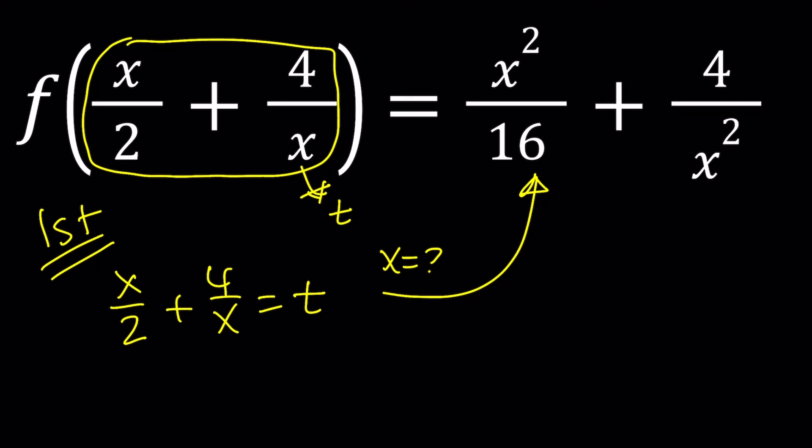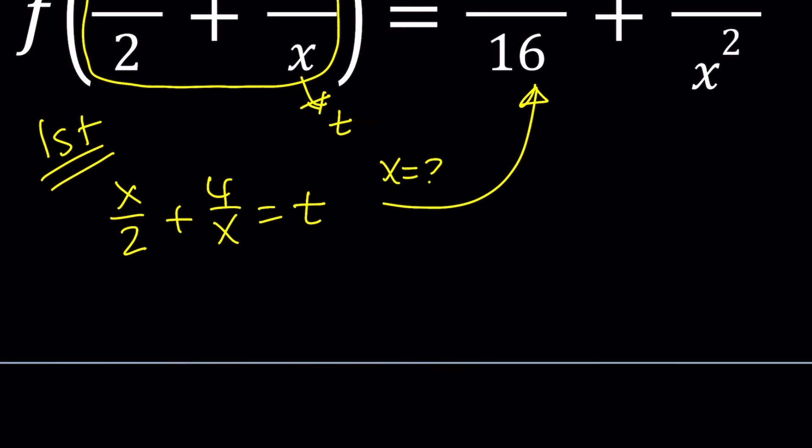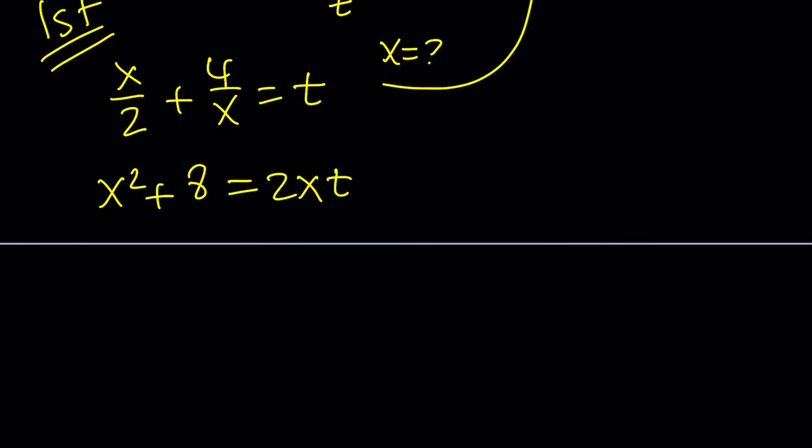Make sense? Because, obviously, whatever we find for x should give us t on the left-hand side. And we can check that, too. So, let's go ahead and cross-multiply, multiply everything by 2x. This is going to be x squared. When you multiply by 2x, this is going to be 8. And this is going to be 2xt. Now, since we're trying to solve for x, let's go ahead and turn this into a quadratic in x, like this.